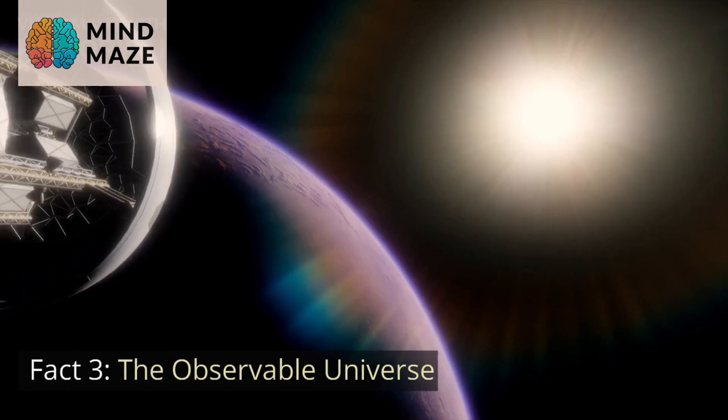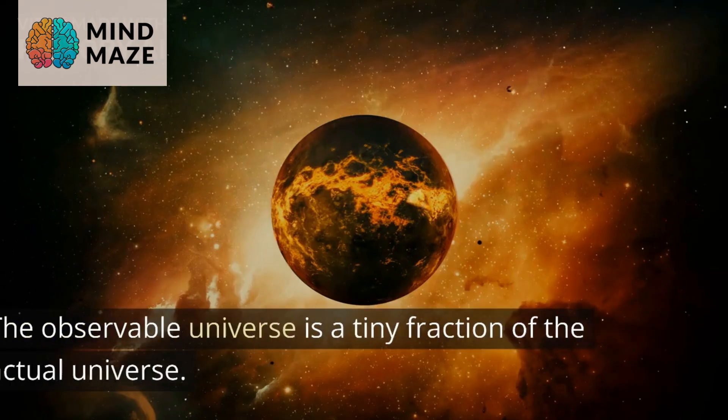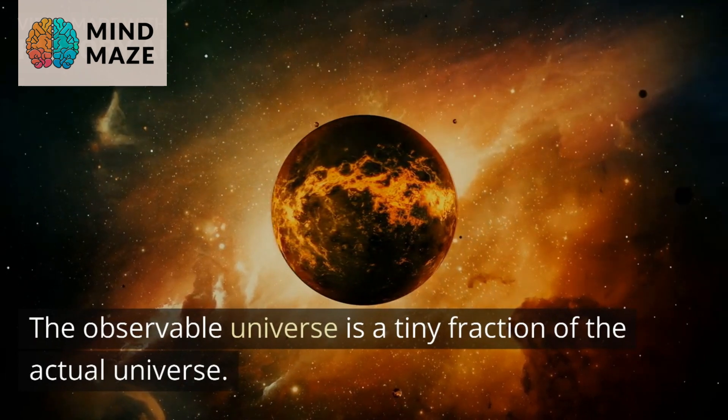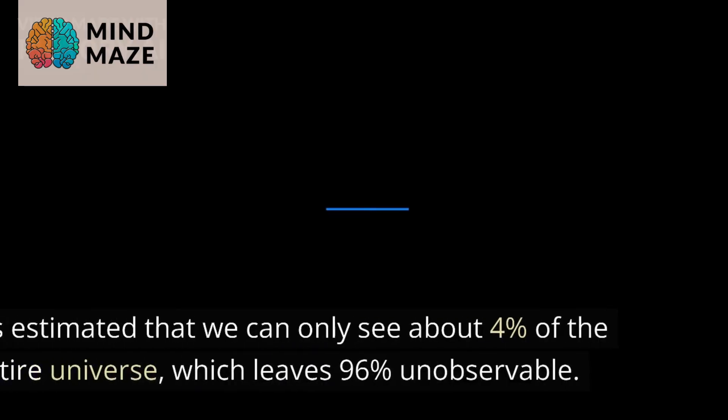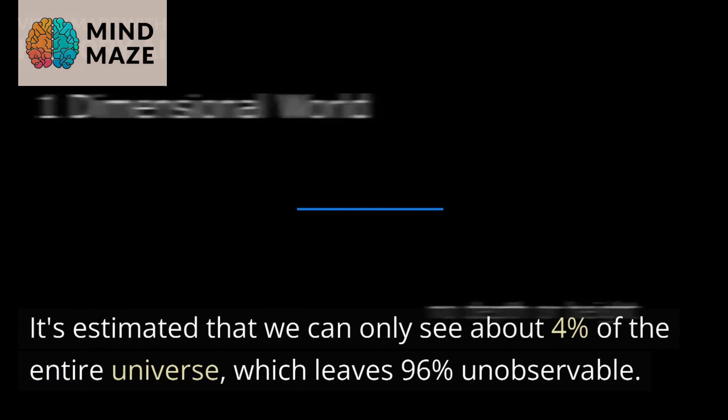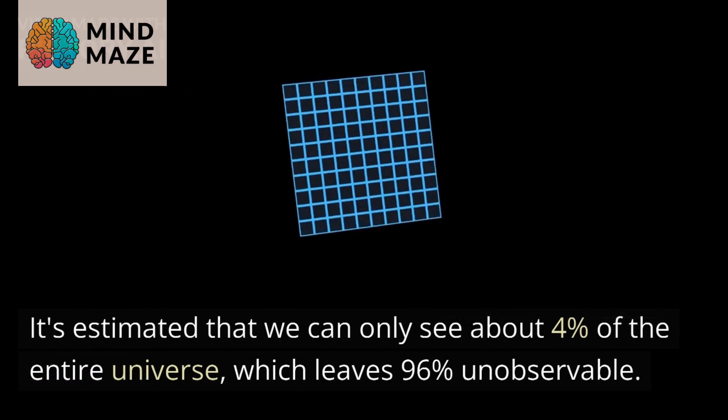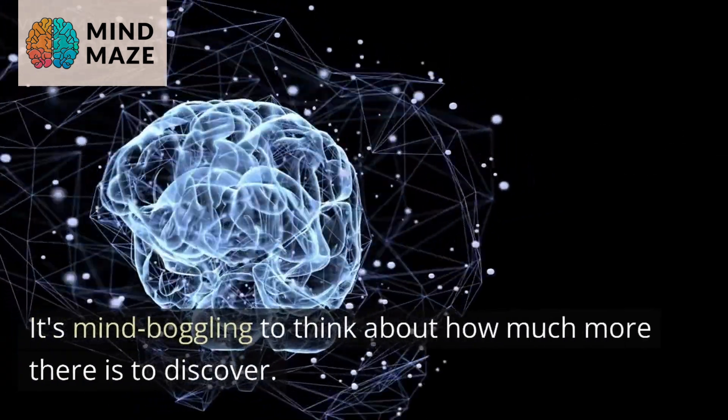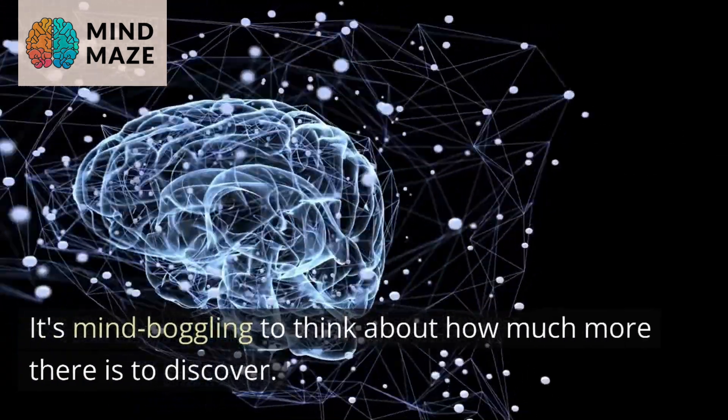Fact three: The observable universe. The observable universe is a tiny fraction of the actual universe. It's estimated that we can only see about 4% of the entire universe, which leaves 96% unobservable. It's mind-boggling to think about how much more there is to discover.